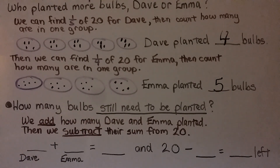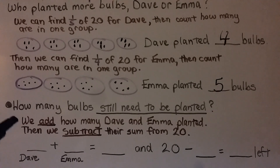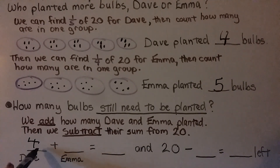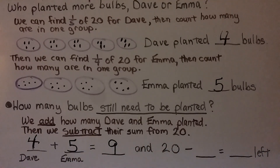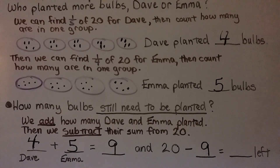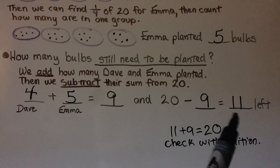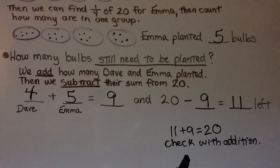So if Dave planted four bulbs and Emma planted five bulbs, how many bulbs still need to be planted? We add how many Dave and Emma planted — Dave planted four and Emma planted five, and four plus five is equal to nine. Then we subtract their sum, nine, from twenty. Twenty minus nine is equal to eleven. We can check that using inverse operation addition: eleven plus nine is equal to twenty. So there are still eleven bulbs left that need to be planted.